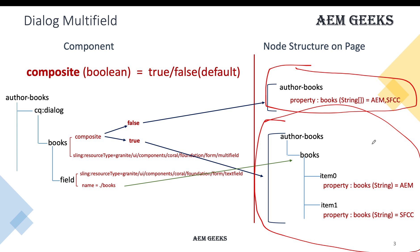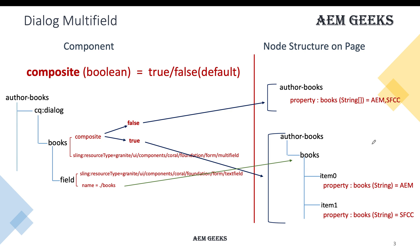Now you should understand when to use false vs. true. As a thumb rule: if you have a single field in your multifield, you can use false. If you have more than one field, use composite true. You can actually use composite true in any case — it lets you write a generic method. Now let's jump to the demo.